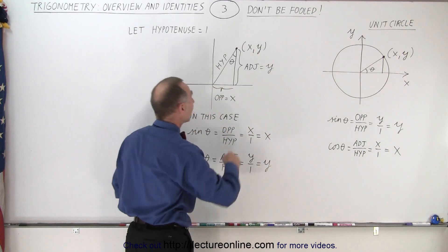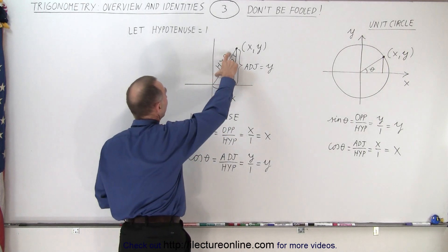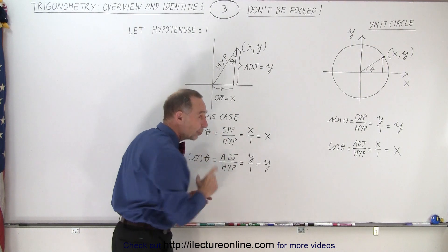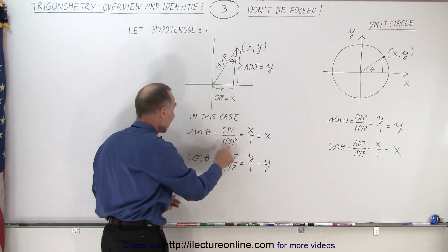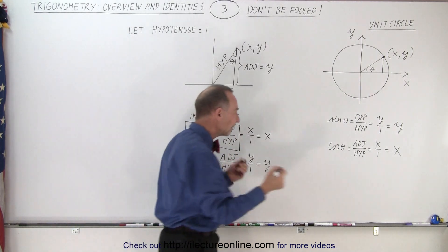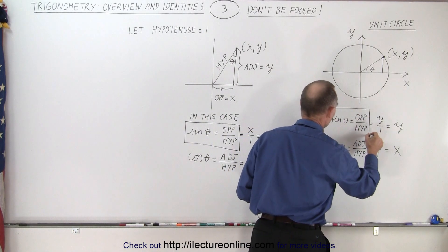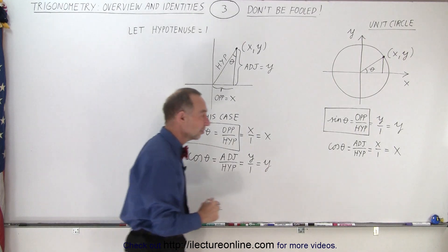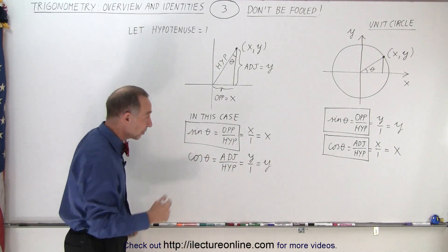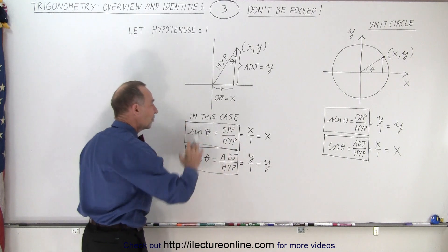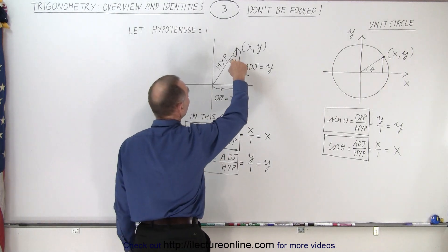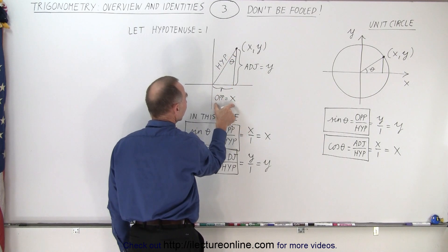What if my triangle looks like this, and my angle is over here? Let's assume that the hypotenuse has a value of 1. You can see that in this case the sine of theta is still going to be the ratio of the opposite side to the hypotenuse — this never changes. That is by definition the definition of the sine of theta, so that never changes regardless of the orientation of the triangle or what situation you're dealing with. In this case the opposite side to this angle is right here — this is opposite to the angle — so that's the value of x at that point.